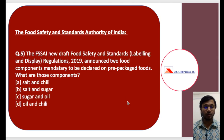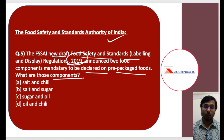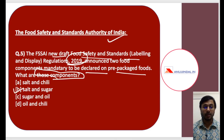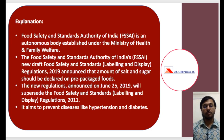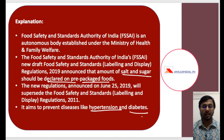The fifth and last question for today is about FSSAI — the Food Safety and Standards Authority of India. The new draft Food Safety and Standard Regulations 2019 announced two food components mandatory to be declared on pre-packaged foods. The answer is B — salt and sugar. Pre-packaged food companies now have to declare the amount of salt and sugar on their packaged foods, and the purpose is simple: to control diseases like hypertension and diabetes.